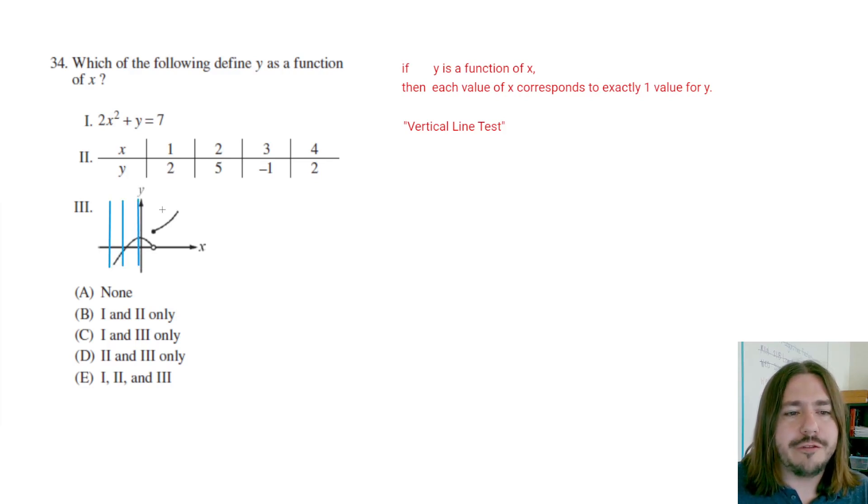But if at any point you can only cross the graph once, then it is going to be a function. Because that means that particular x value that you're drawing the vertical line to only has one y value associated with it. This one would probably be a little further down. This second vertical line I drew would only cross once. The only real questionable piece to this piecewise graph is like, what if I draw a vertical line right here? What does that mean? Does that have two outputs or just one?